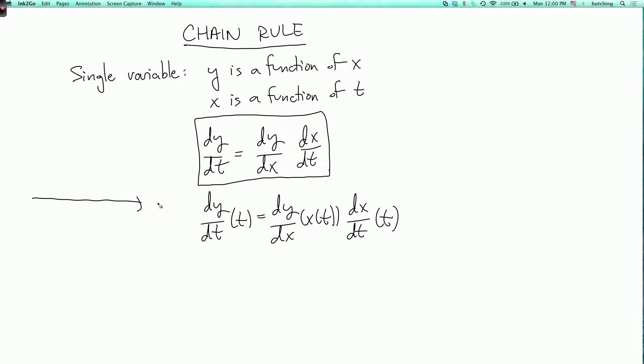For example, suppose that we're walking along a one-dimensional mountain range, and we think of y as the height at position x. So y is altitude, x is position, and suppose we're walking along this one-dimensional landscape, with t being the time parameter. Then what the chain rule says is that the rate of climb, that is the rate at which our altitude is changing with respect to time, is equal to the slope times the horizontal speed, the horizontal velocity.